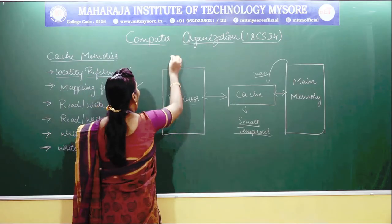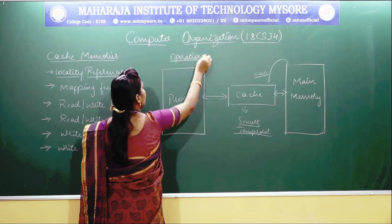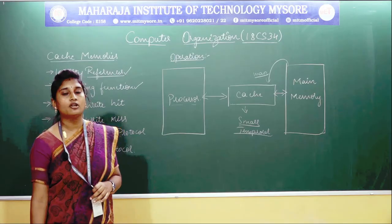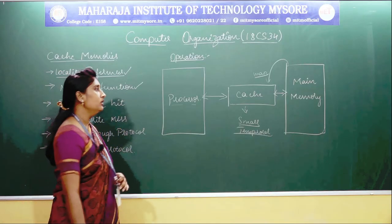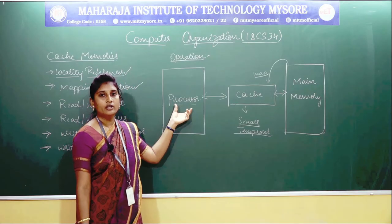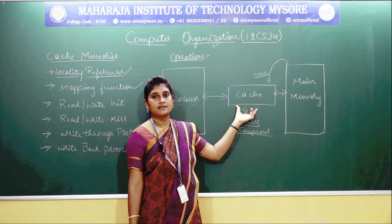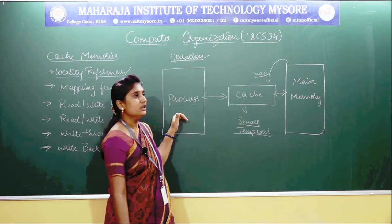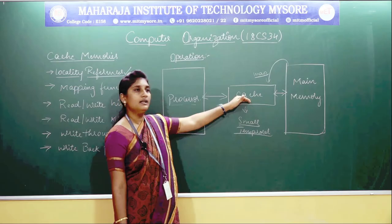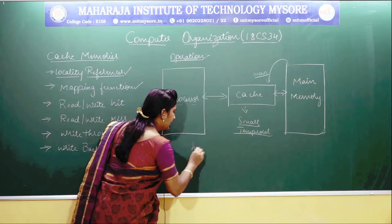Next, coming on to the operation of your cache memories. How does the operation of the cache memory work? Whatever request is made by the processor will go and access the cache. If the requested data made by the processor is present in the cache itself, you will be calling it a hit.